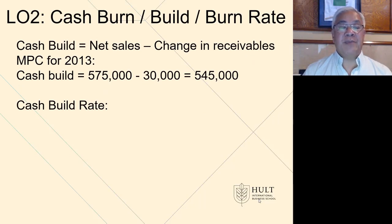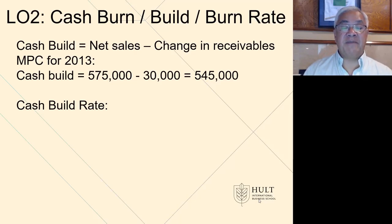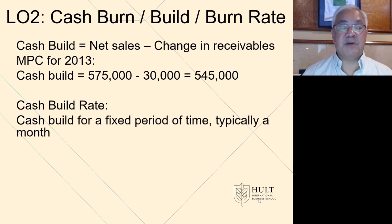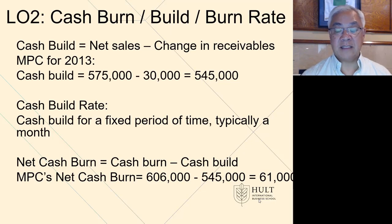Now let's look at cash build — how much money you're getting from sales. It's net sales minus the change in receivables, specifically minus any increases in receivables. So if we had sales of $575,000 but our receivables went up by $30,000, we didn't get all $575,000 — we only got $545,000 in cash. Cash build equals net sales minus the increase in receivables. The cash build rate looks at a specific time period, most typically per month. The net cash burn equals cash burn minus cash build: we were burning at 606, building at 545, so we're burning $61,000.